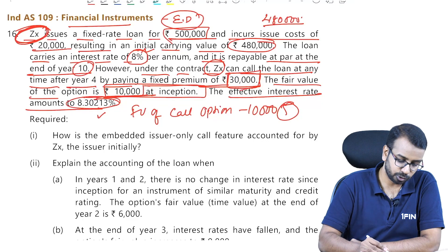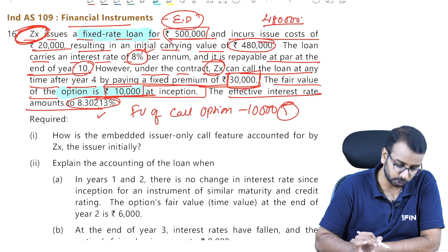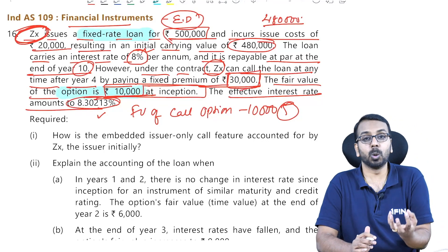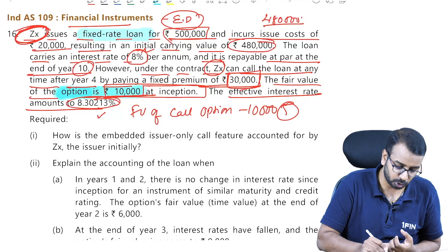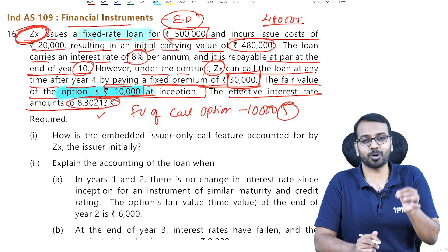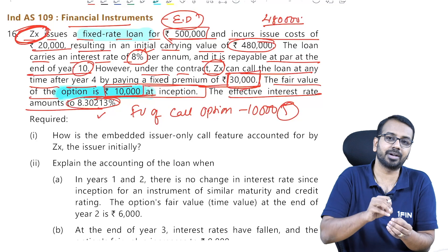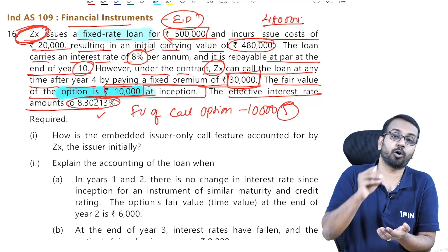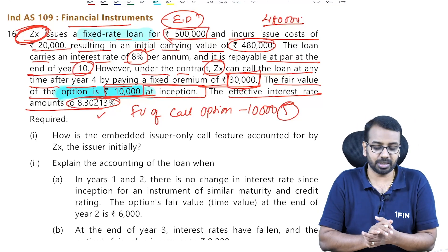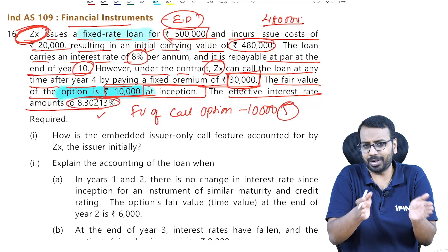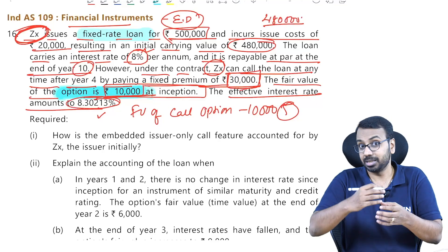In this case, you have a loan and you have an option on the loan. The loan is the host contract, and the option on the loan is the embedded derivative — there is a derivative embedded onto the host contract. The first thing we have to determine is whether we need to separate these or account for them as a single contract.